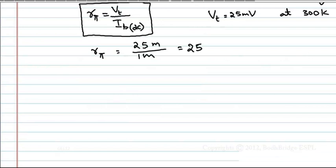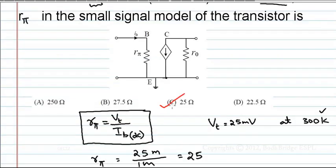So, rπ is how much? rπ is 25 ohm. Therefore, C is the correct option.